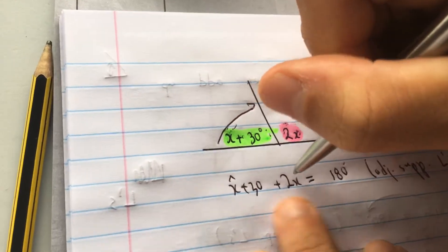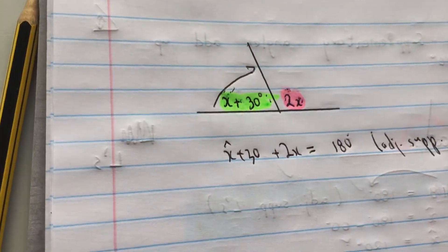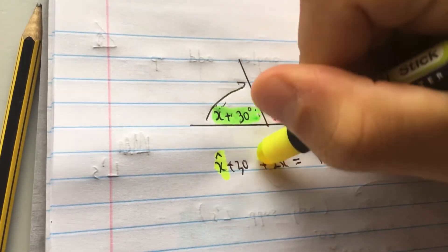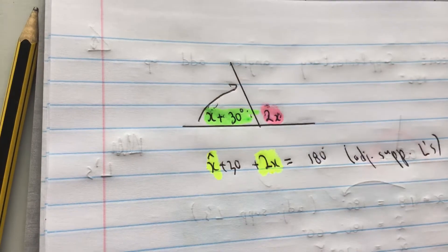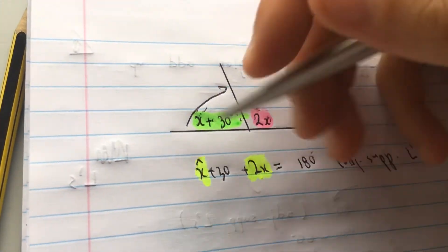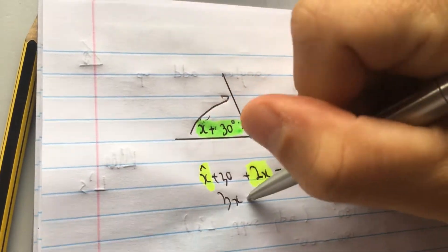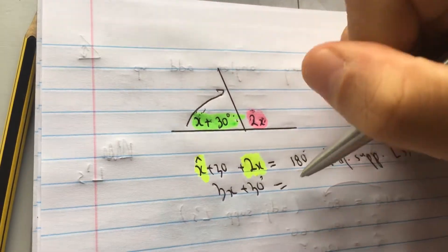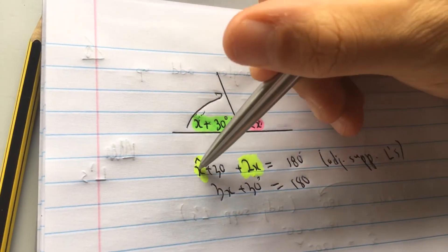But here's algebra, people. Can I add... as I did algebra with you guys, an equation. Can I add those two together? Yes, I can. What's x plus 2x? It's 3x plus 30 degrees equals 180. So all I do is add that and that together.